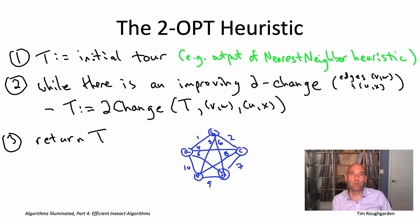Let me also remind you that if we run the nearest neighbor heuristic starting from vertex A, what the heuristic winds up doing is output the tour that traverses the perimeter. So that'll be the starting point for our two-opt heuristic.